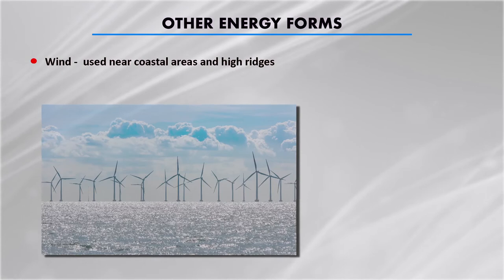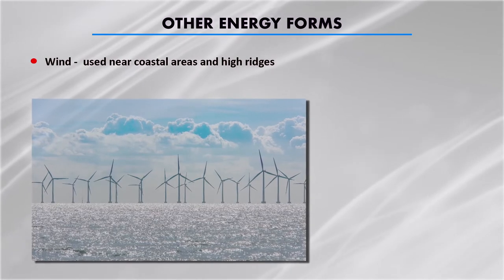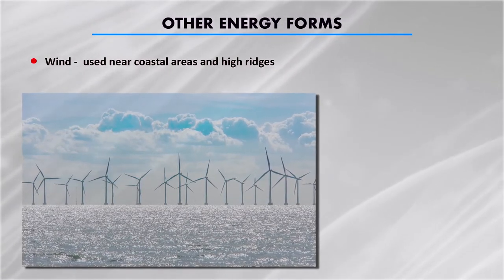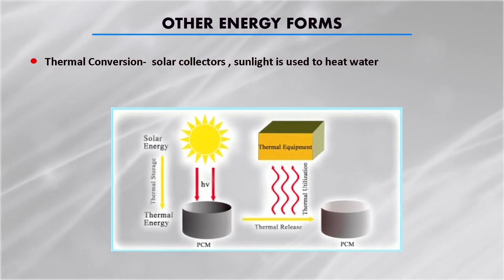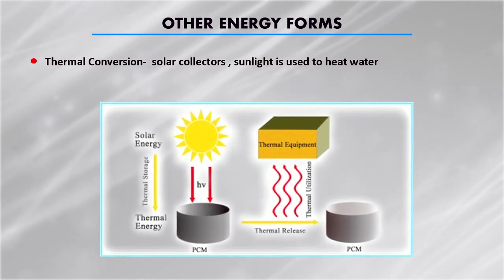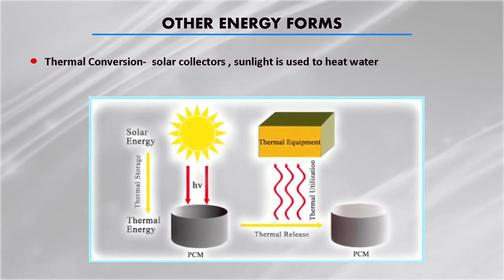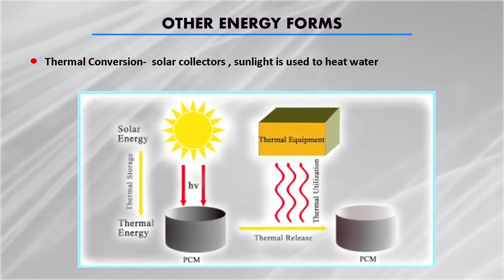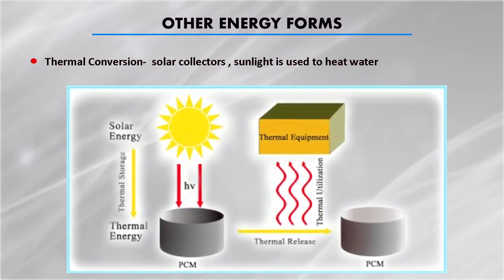Wind energy is used near coastal areas and places with high wind possibilities, where wind turbines are installed. This is a renewable energy source which can produce electrical power. Thermal conversion is also possible using a solar collector — heat energy received from the sun is collected and converted into electrical energy. Sunlight heats water, steam is produced, steam runs the turbine, and then mechanical energy is converted into electrical energy by using a generator.